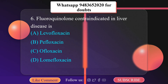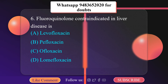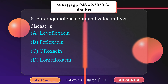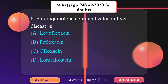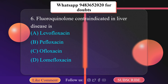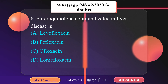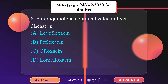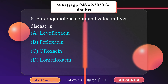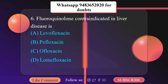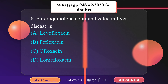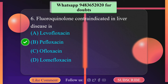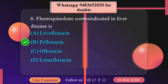Fluoroquinolone contraindicated in liver disease is: A. Levofloxacin, B. Pefloxacin, C. Ofloxacin, D. Lomafloxacin. Pefloxacin has a longer T-half. It will accumulate on repeated dosing, achieving plasma concentrations twice as high after a single dose. Because of this longer T-half, it is effective in many systemic infections. However, the dose of Pefloxacin needs to be reduced in liver disease but not in renal insufficiency. The correct option is B — Pefloxacin.